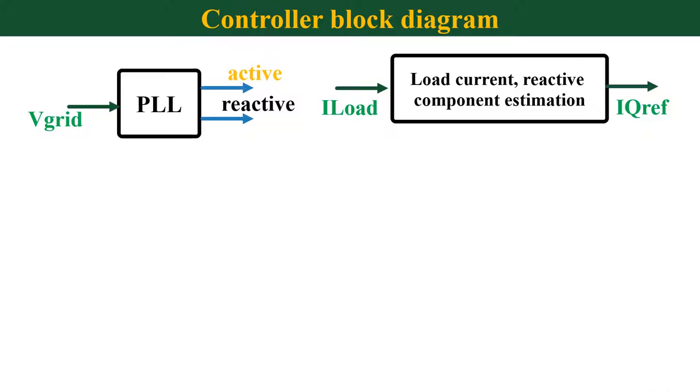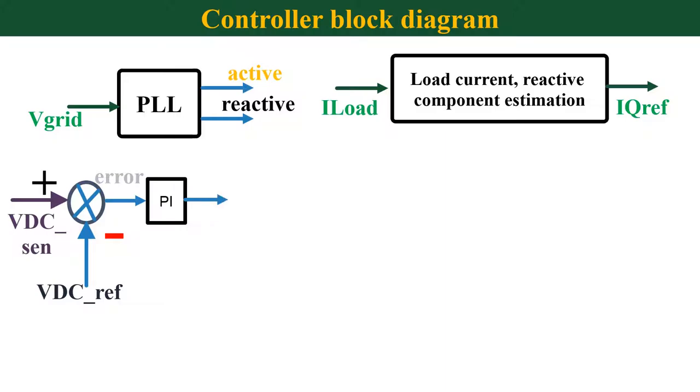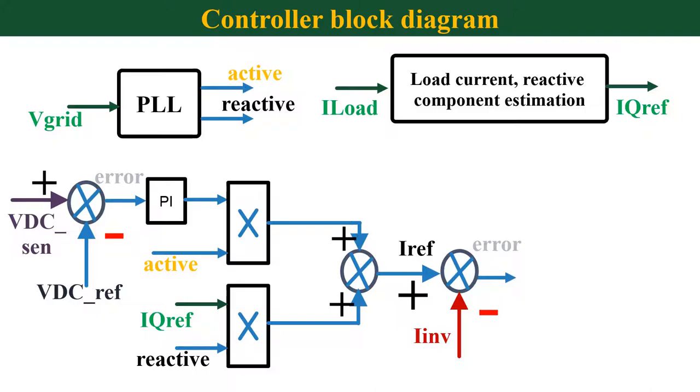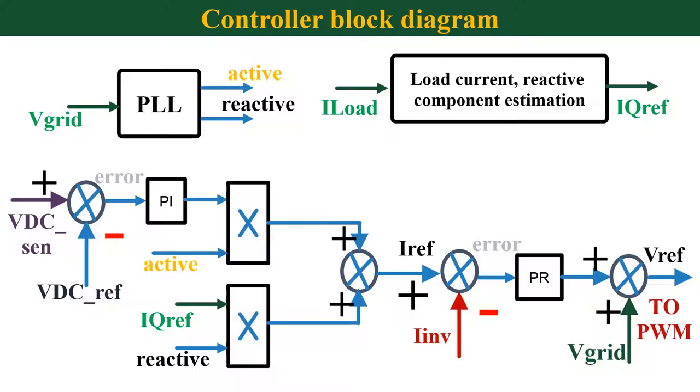Now I will start writing the controller. First, we need to find the error between actual sensed VDC and reference VDC. This error is then fed to a PI controller. The output of PI controller is multiplied with active component generated by the PLL. Now the estimated reactive component in the load current is multiplied with the reactive component generated by the PLL. The output of both the multiplier is then added and that will give the current reference. This current is then compared with the actual inverter current to find the error. This error is then fed to a PR controller. The output of PR controller is then added with the grid voltage. This will give the final reference voltage and this voltage is used for the PWM generation.